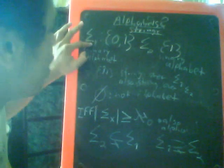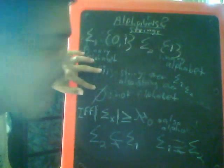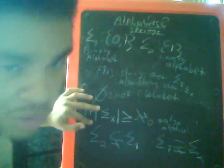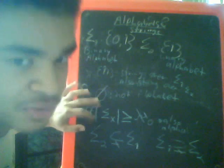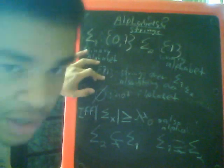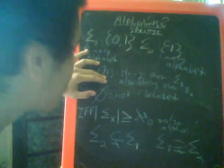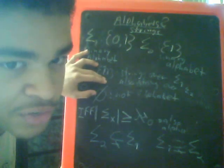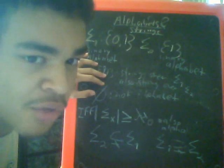All right, so just quick recap. Alphabet is a finite collection of symbols. If it doesn't have any symbols, it's not an alphabet. If there's more elements than the set of natural numbers, also not an alphabet - it has to be finite. String is basically parts of the alphabet in a different set. Just review this and it'll make a lot of sense.